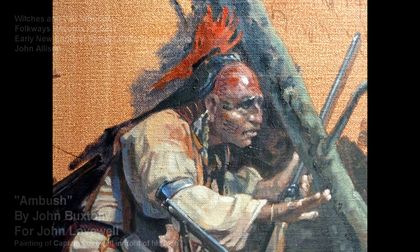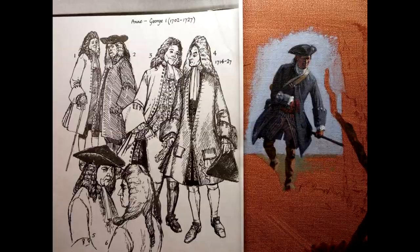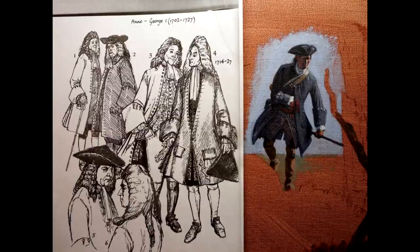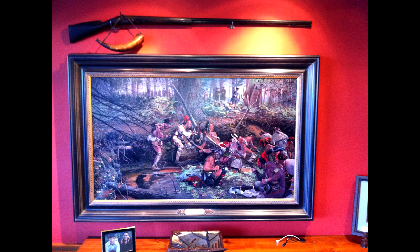The ambush was painted by John Buxton, and this is one of the thumbnail sketches he made of one of the Indians, laying in wait for Captain John Lovewell. This next thumb is of Captain Lovewell on the right side, and some type of clothing from that period that he had done for research for this painting. This is the painting in place in a lodge owned by John Lovewell, the present John Lovewell in Lake Tahoe, California.